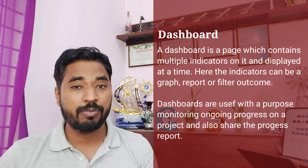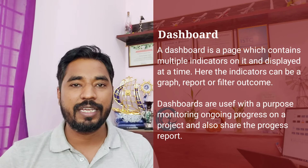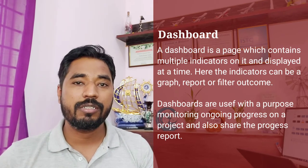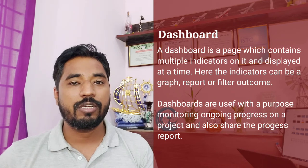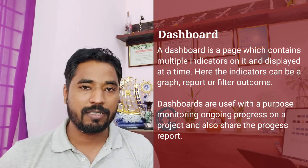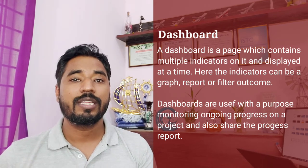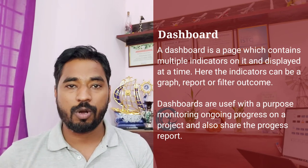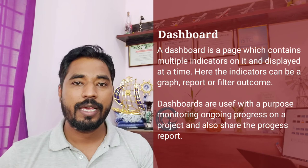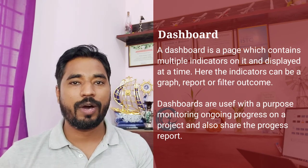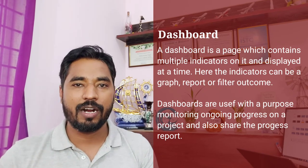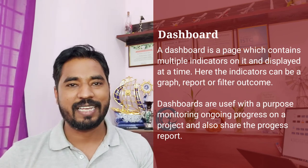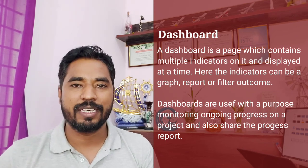A quick example: a dashboard can even be seen in a car. We call it a dashboard because it has many indicators at one place — your speedometer, your odometer, your fuel indicator, the engine temperature, and many other things. These tell you the current status of your car: what inputs are on, what inputs are off, whether you're running low on fuel, and more. This is why the front panel of a car is called a dashboard — it has multiple indicators at one place.